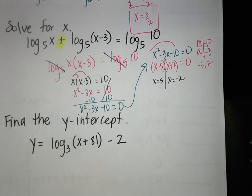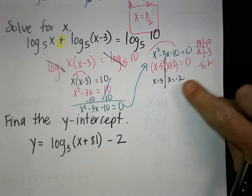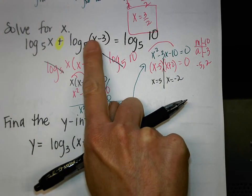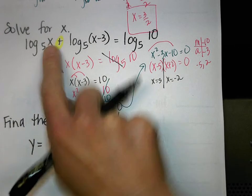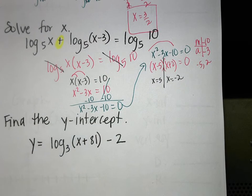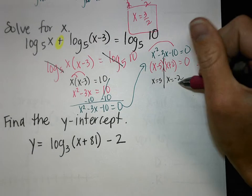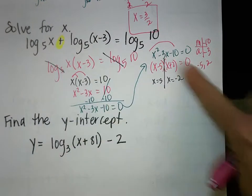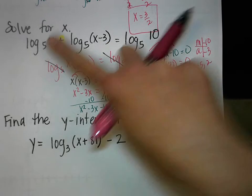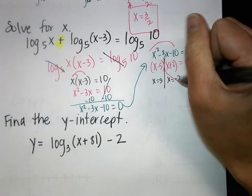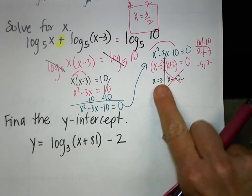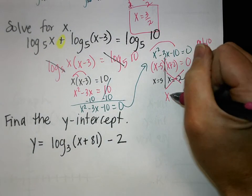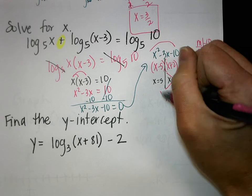You always need to go back and check, because you can't have a negative inside a log. Plugging in negative 2 gives a negative number, so negative 2 won't work. Plugging in 5 works, so the answer is just X equals 5.